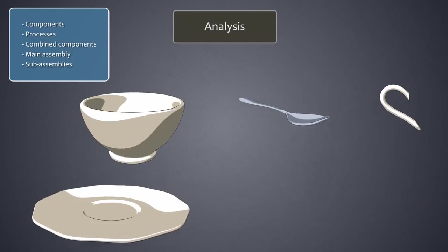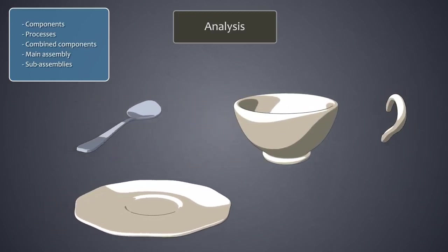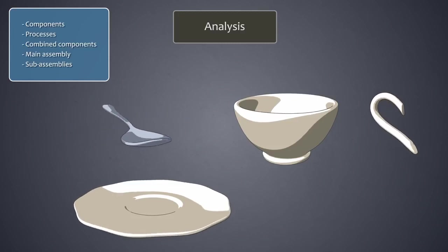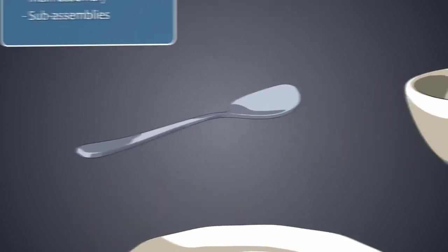A component is made up of a single piece and is supplied as is for assembly. In our tea set, components include the spoon, the ear, the cup, and the saucer.